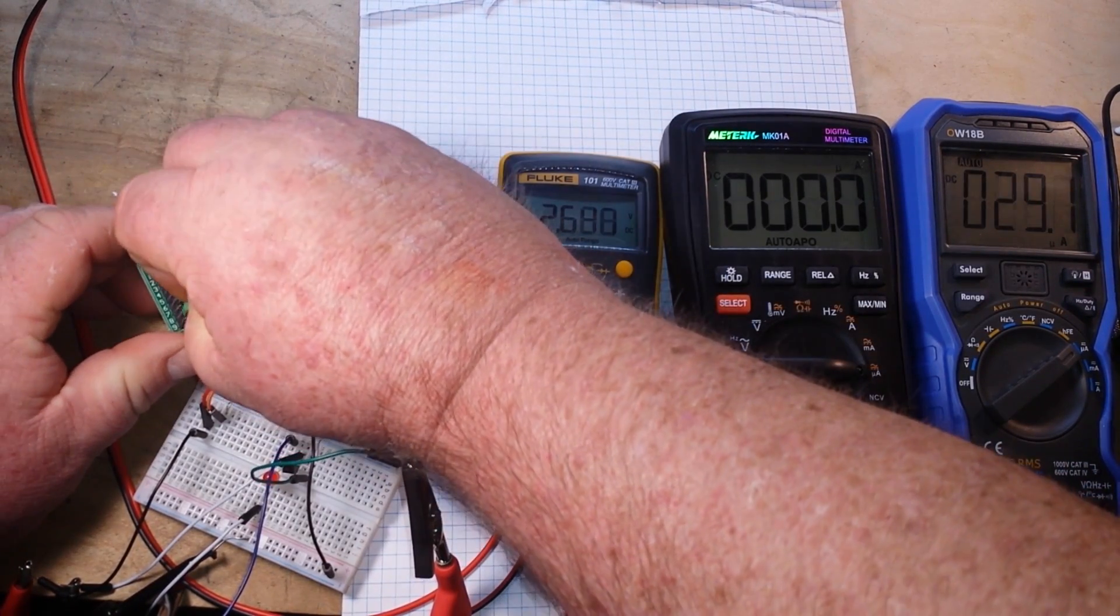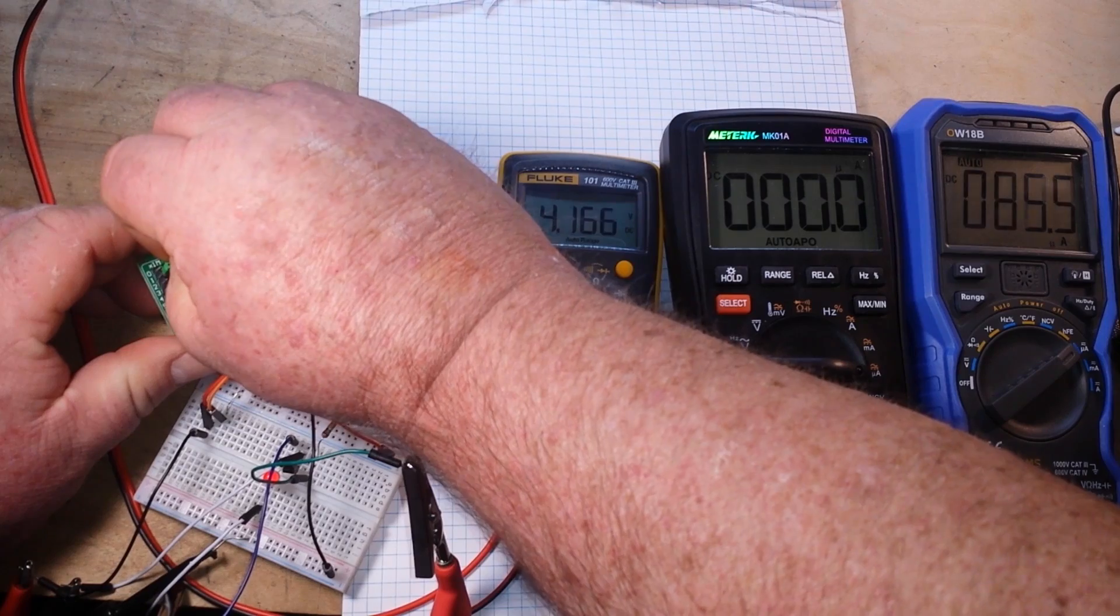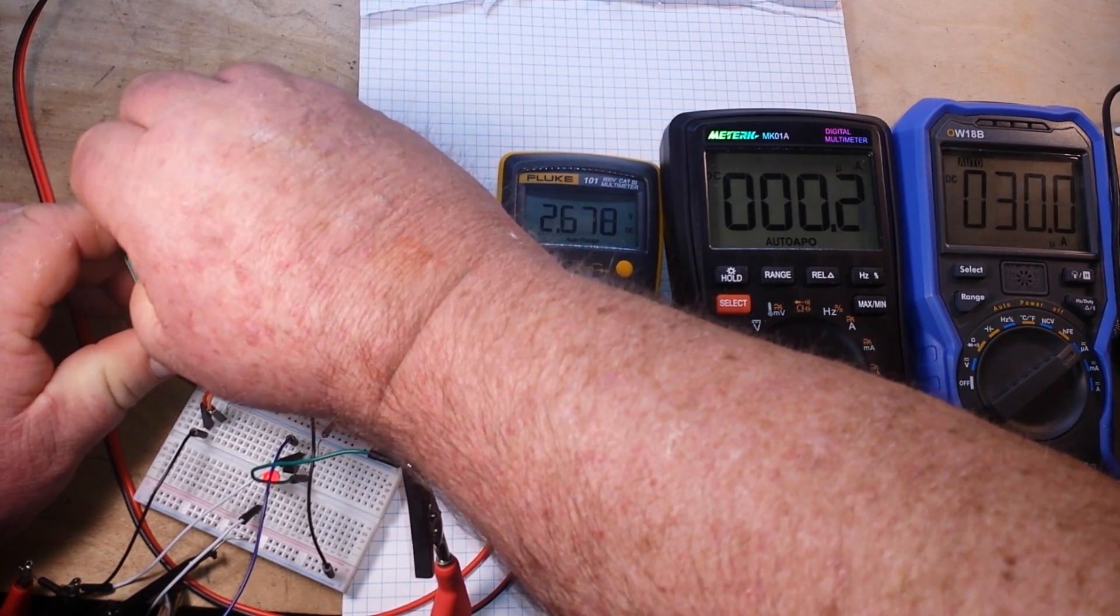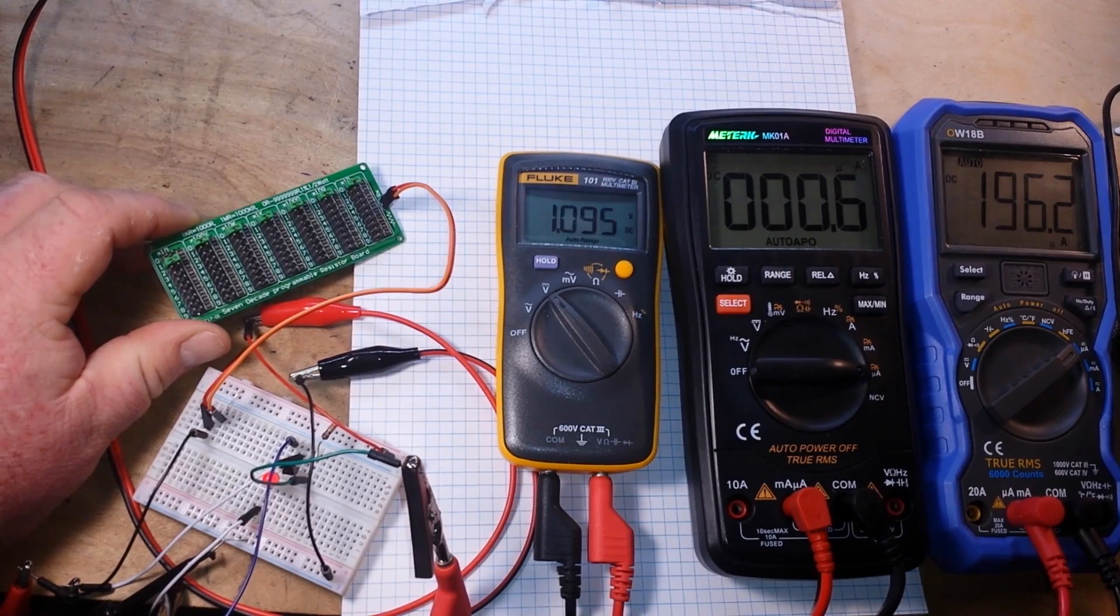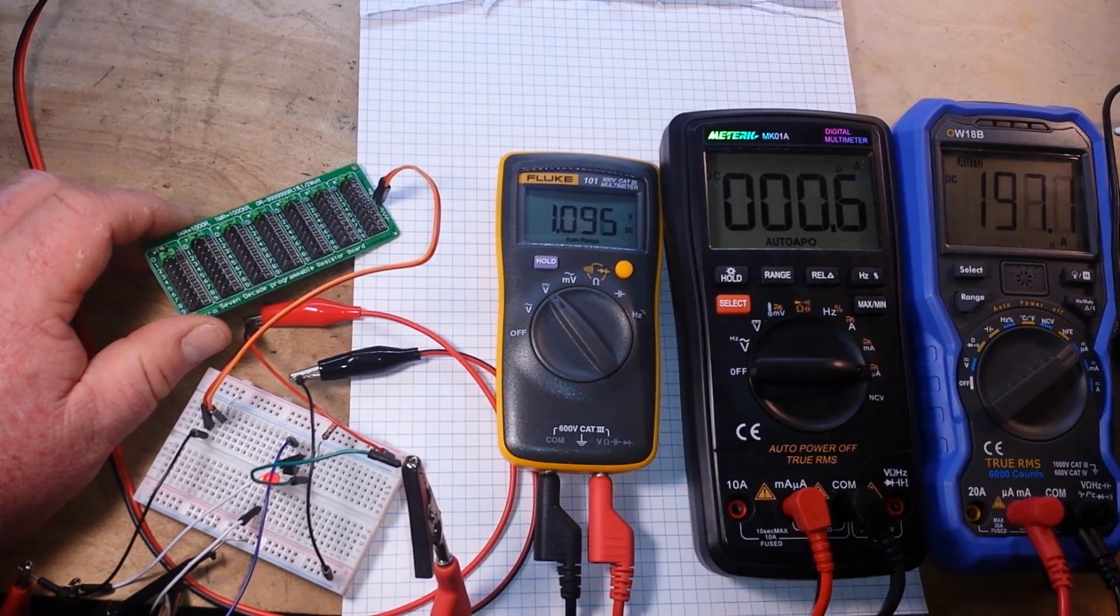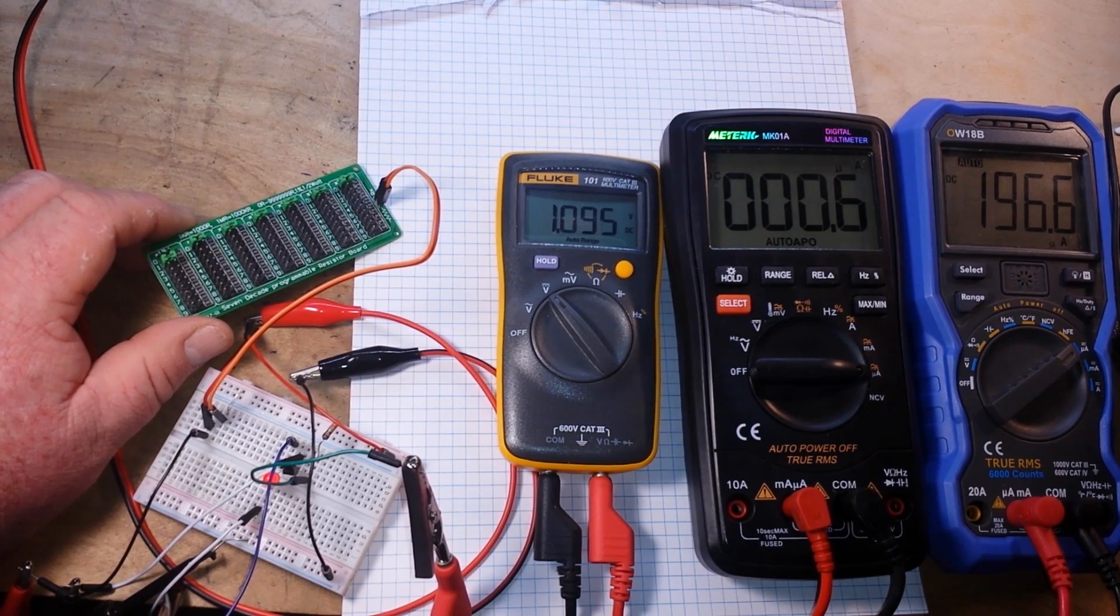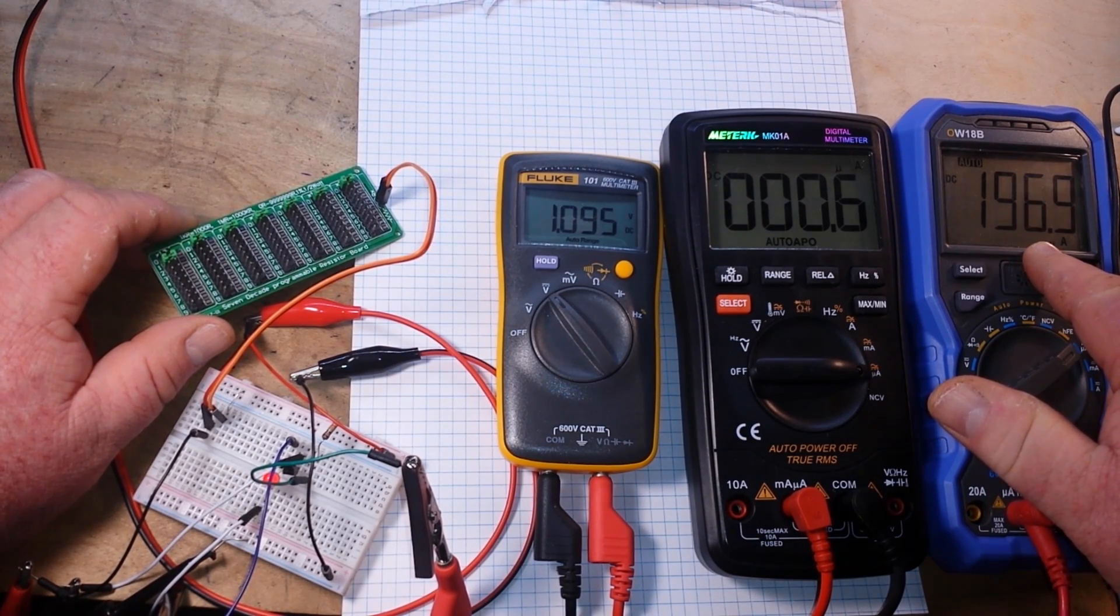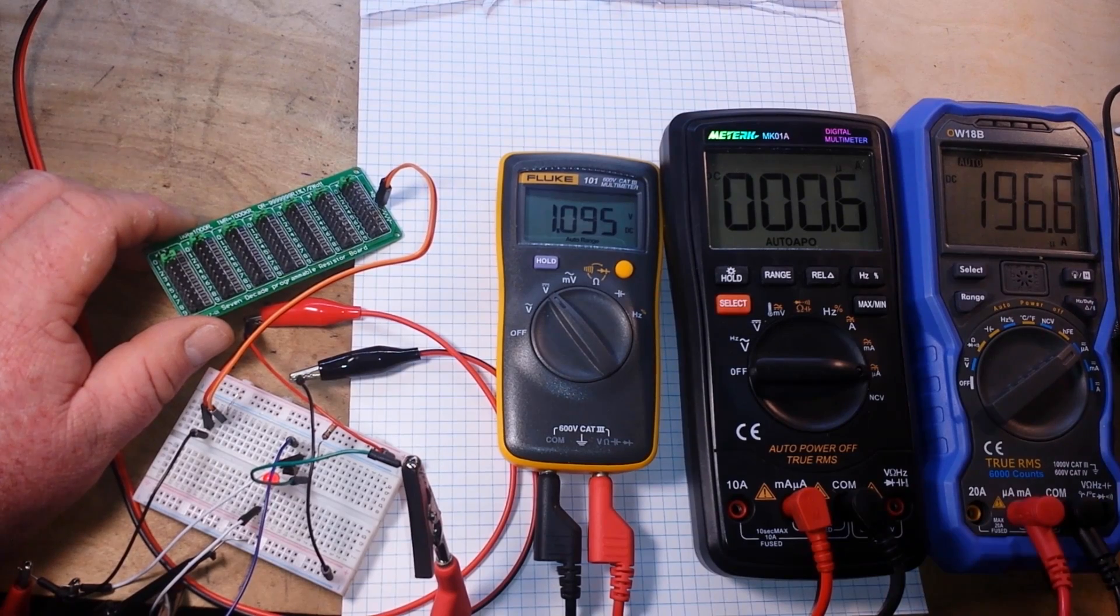And our collector-emitter voltage. Let's go one meg. There's one mega resistance and we're getting 0.6 microamps of base current, 197 collector current, and one volt of collector-emitter voltage.